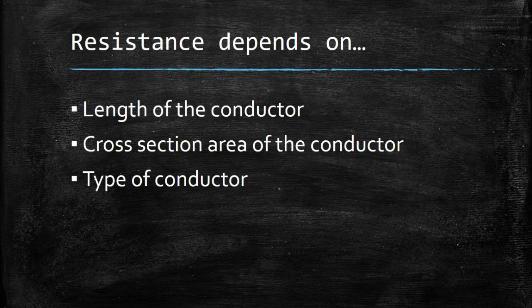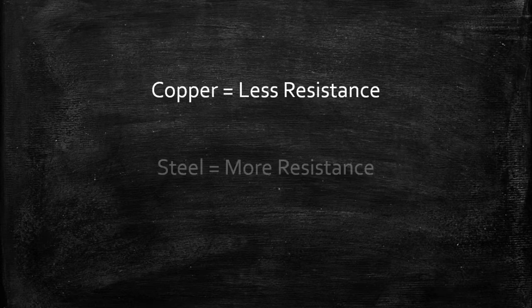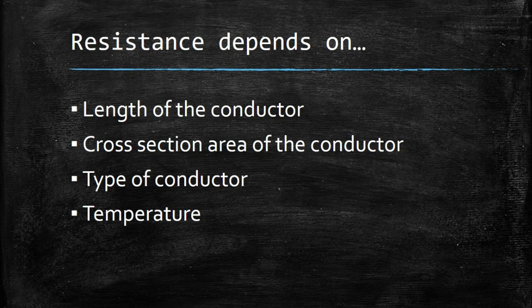Next is the type of conductor. If you use copper you will get less resistance, and if you use steel you will get more resistance — the material used makes a difference. Next is temperature. When there is an increase in temperature, the material expands or contracts depending on the material, and with that expansion the resistance is also going to increase.